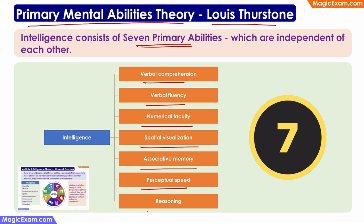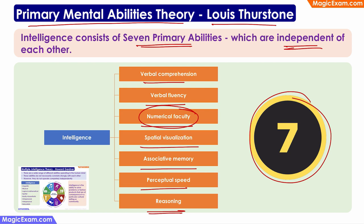He says that these seven types of abilities are independent of each other. That is, a person might have excellent numerical faculty, however, the person might be missing verbal comprehension and verbal fluency. Or a person might have all of these different types of abilities, but only to a small extent. Therefore, these are independent of each other.